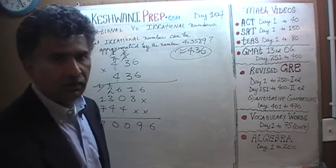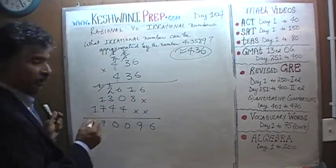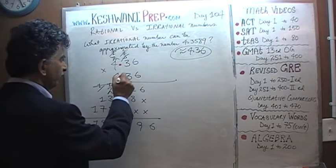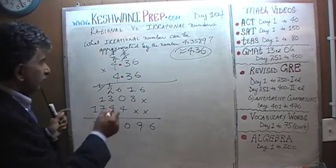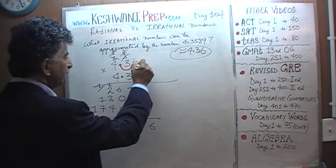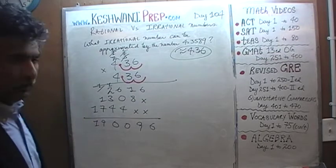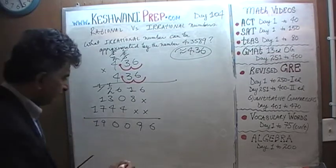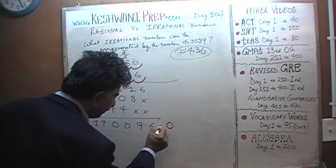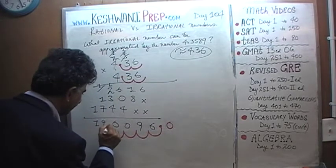Now we go back and take care of our decimals. The original number was 4.36 times 4.36. We have to move the decimal two spots in each number, so in the final answer we move it four spots total — one, two, three, four. Voilà.